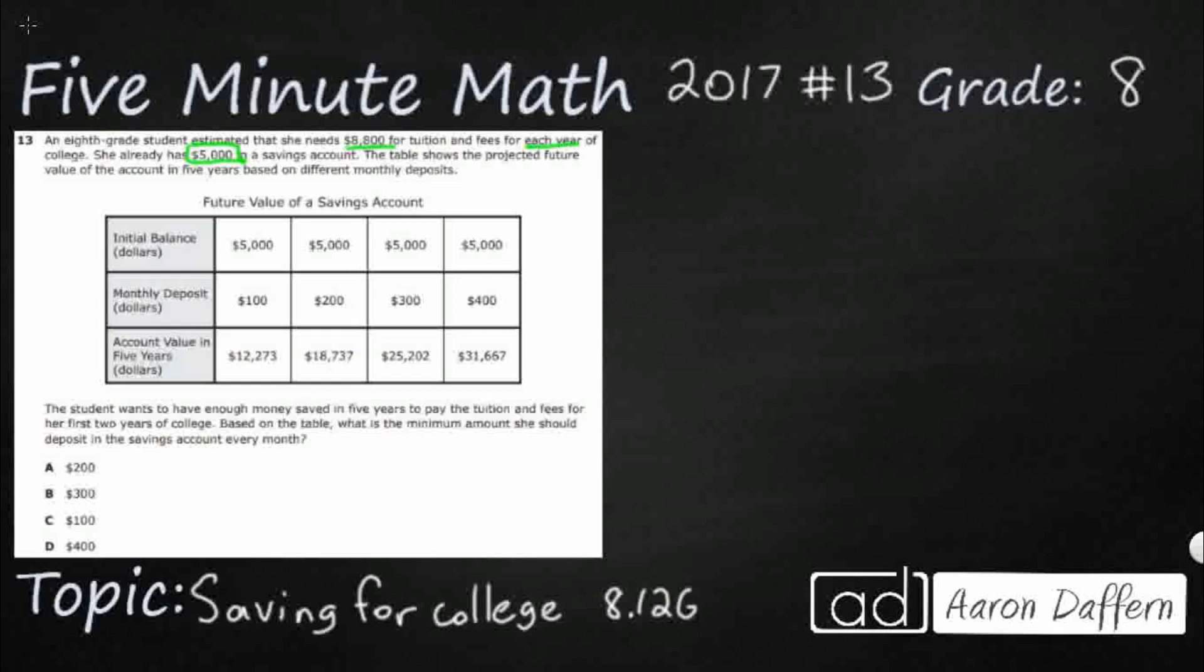So take a look at our columns right here. Each of these has the initial balance. That's going to be the principal. But that principal changes because we're depositing $100 per month, $200 per month, $300 per month, $400 per month. We don't need to calculate all that. They have already done that for us. But take a look at the values.